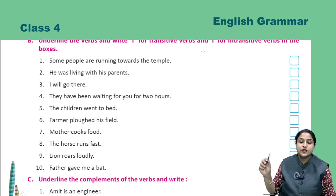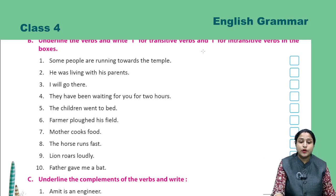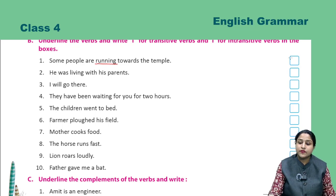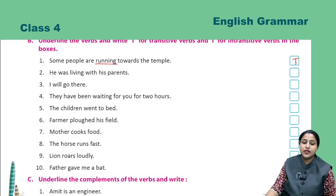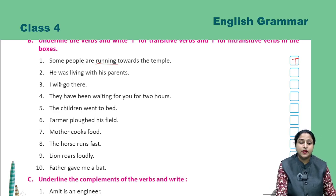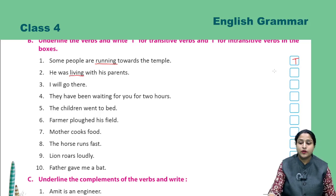First: 'Some people are running towards the temple.' Here we can see there is an object. 'Running' is the verb, and this is a transitive verb — T.